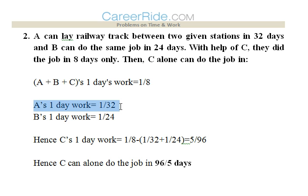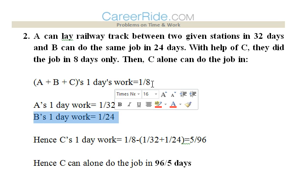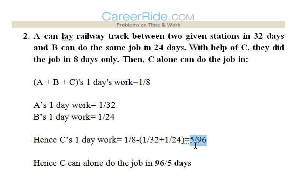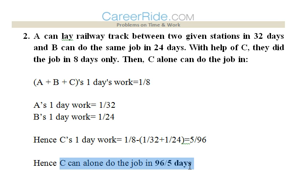A's one day work would be 1/32 and B's one day work would be 1/24. We'll add both these and subtract from the whole to get C's one day work. C's one day work = 1/8 minus (1/32 plus 1/24), which gives 5/96. So C alone can do the job in 96/5 days. Since C's one day work is 5/96, reversing it, C can alone do the job in 96/5 days.